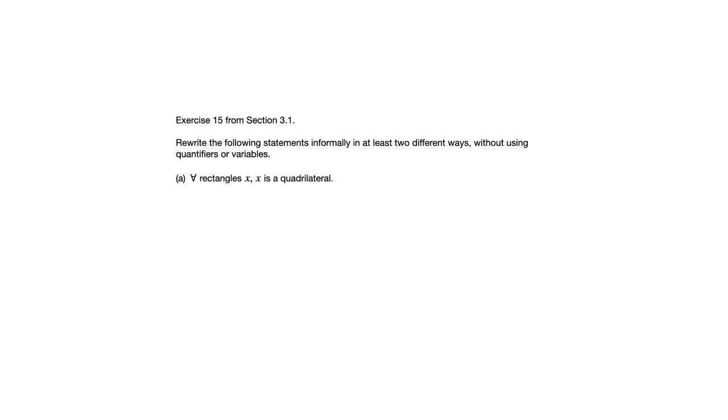The given quantified statement says for all rectangles x, x is a quadrilateral. We want to rewrite this without using the universal quantifier that we see there, without using x. No variables, no quantifiers. The thing to think about is how do I kind of boil this down to its essence of what it's really saying. One possibility is simply all rectangles are quadrilaterals. Equivalently, we could say every rectangle is a quadrilateral. That's the type of answer they're looking for. They don't want any variables, no quantifiers, just a nice, plain, informal statement that still captures the original meaning.